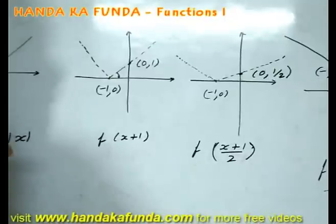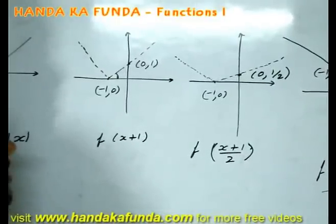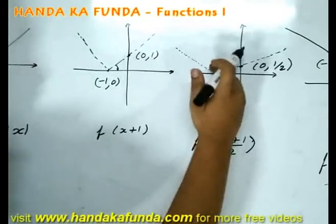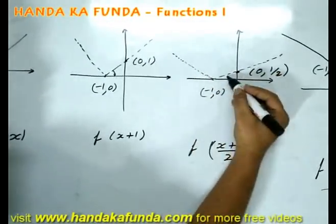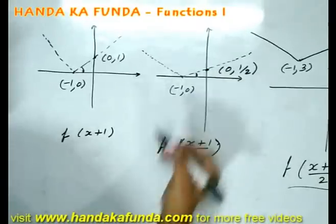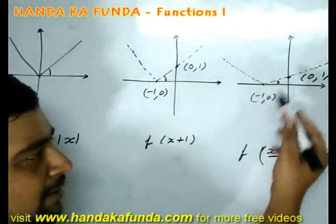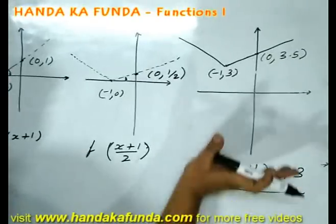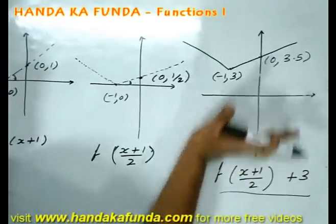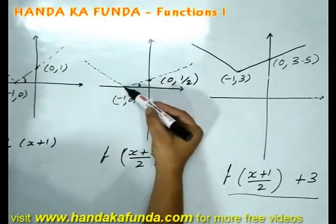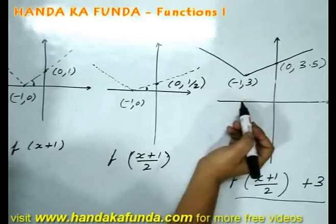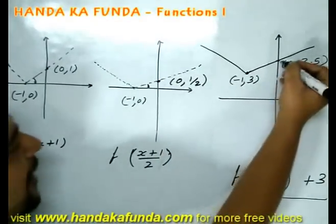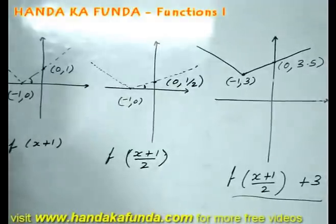Then I am dividing the entire thing by 2. How does that change the graph? As I said earlier also, when you divide it by something, the graph would become wider. The angle with the positive direction of the x-axis will reduce. That is what is happening here. And finally, when I am adding 3 to the entire thing, the entire graph will shift upwards as you can see here. It was touching at minus 1 comma 0. It has moved up to minus 1 comma 3. This point which was 0 comma half has moved up to 0 comma 3.5.